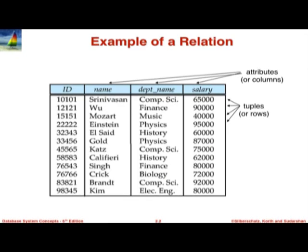In this slide you see the same example of a relation which we saw before. You will notice that columns are called attributes — this is shown explicitly here. The name 'attribute' comes from the formal modeling of things as relations, from the theoreticians, while 'columns' came from the practitioners, so both are used interchangeably.